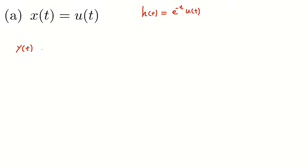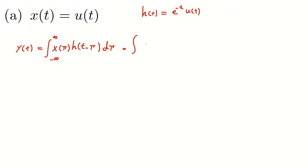For such a system, if I want to find the system's response to this x(t), I should calculate the convolution between x(t) and h(t): the integral from negative infinity to infinity of x(τ) times h(t - τ) dτ. If I replace x(t) and h(t) by their corresponding expressions, we have the integral of u(τ) times e^(-(t-τ)) u(t-τ) dτ from minus infinity to infinity.